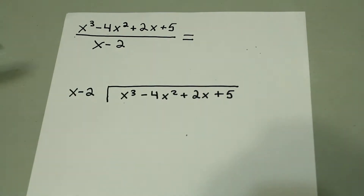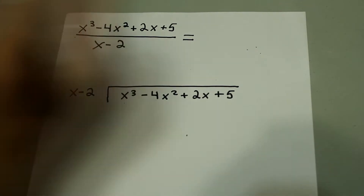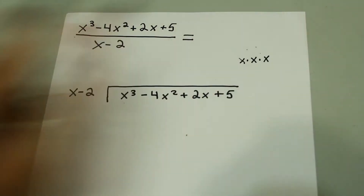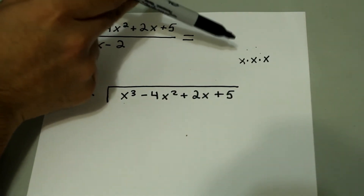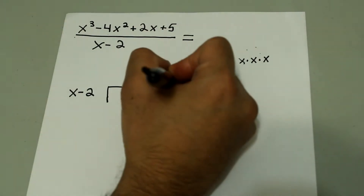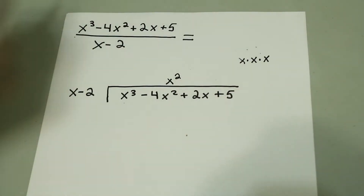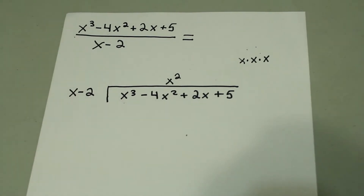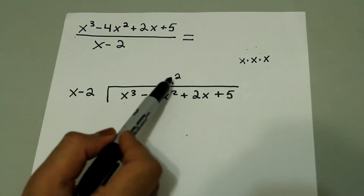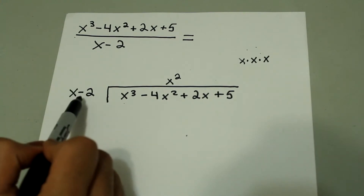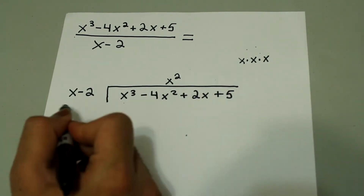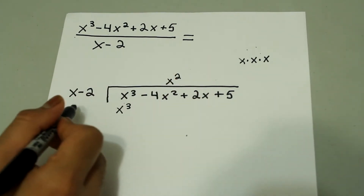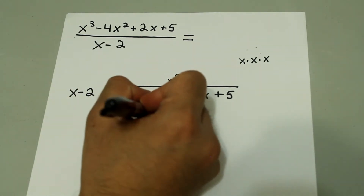So now, what do we need to multiply x by to get to x cubed? Well, x cubed is just x times x times x. We have one x, so we need to multiply that by x squared. So we're going to write x squared on top, aligned with the same degree — x squared goes on top of x squared. Next, we multiply: x squared times x gives us x cubed, and x squared times negative 2 gives us negative 2x squared.